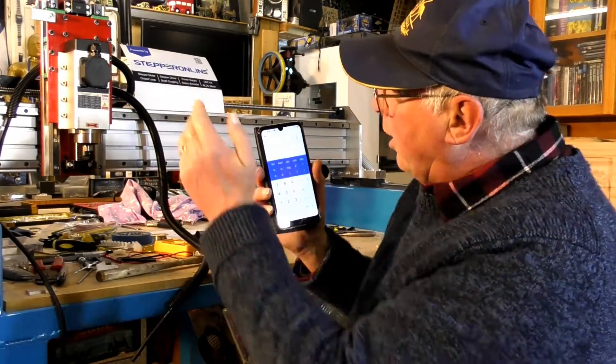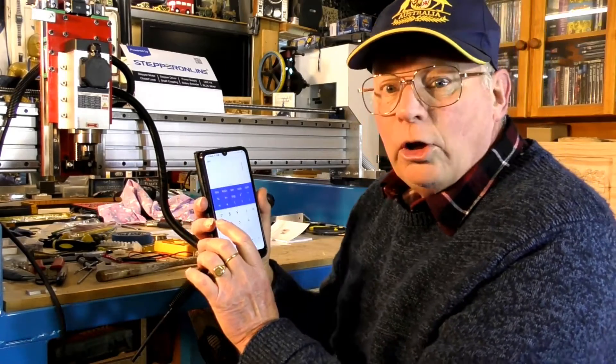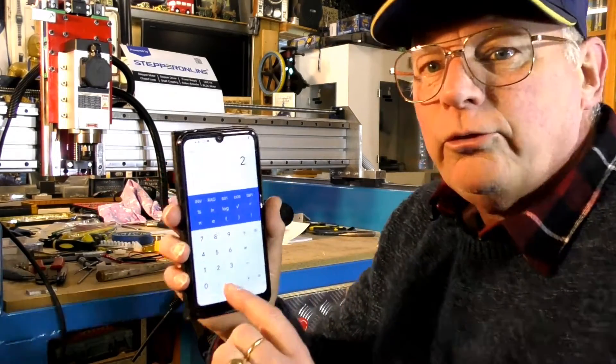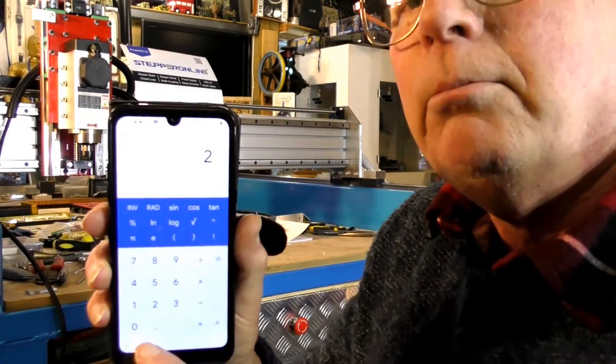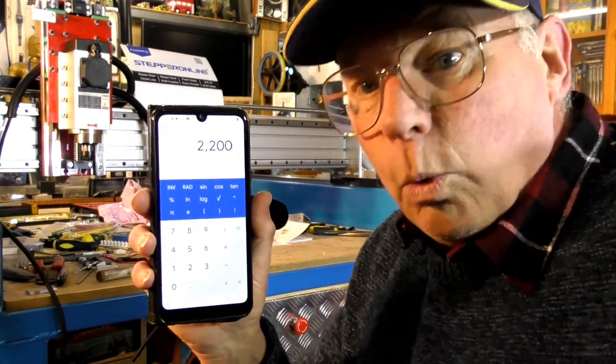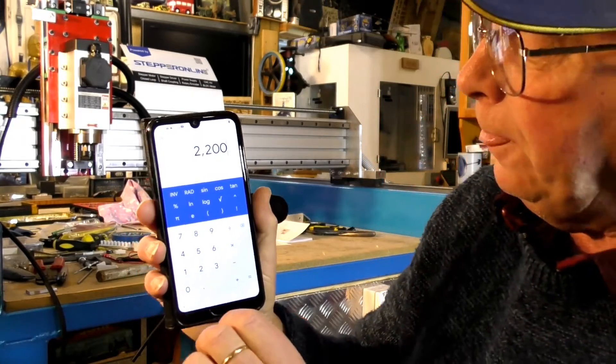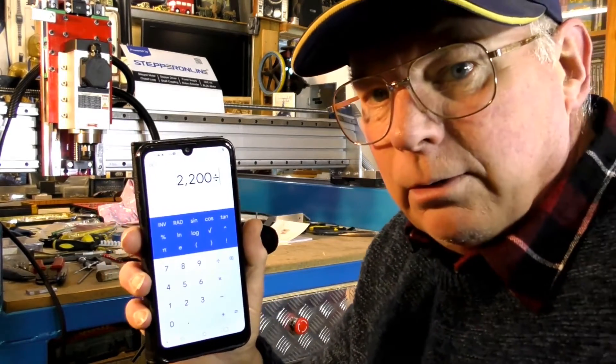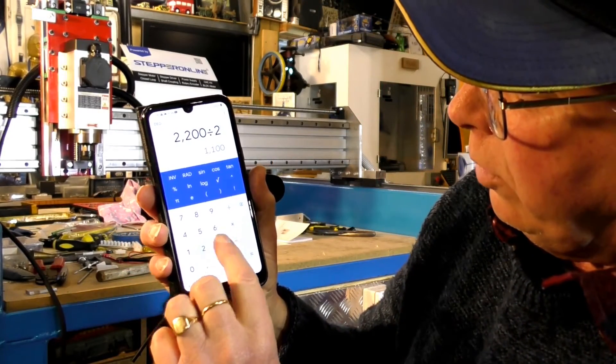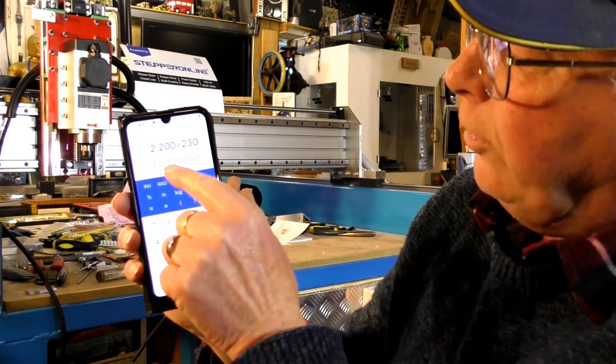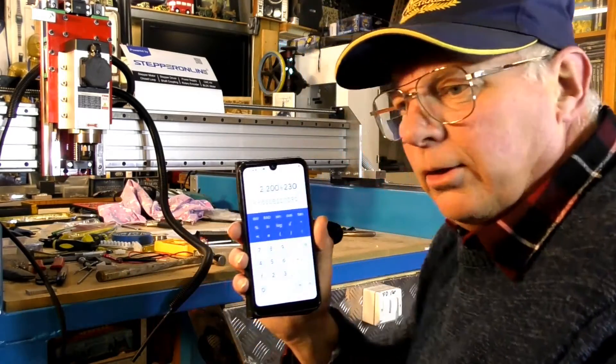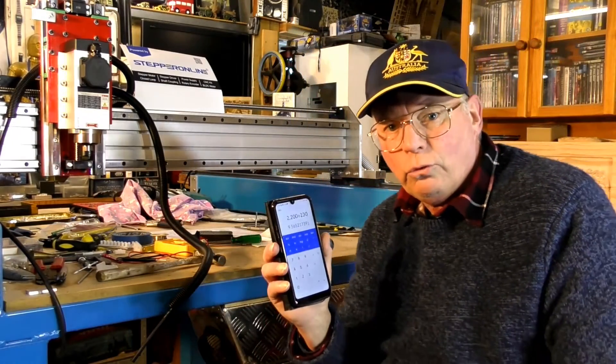In our case this is 2.2 kilowatt, so that's 2,200 watts. 2,200 watts divided by the circuit voltage which is 230. There's your answer, 9.56 amps. That's the maximum draw.